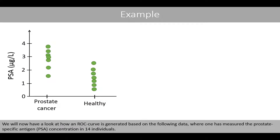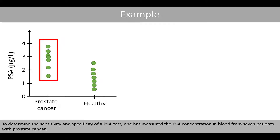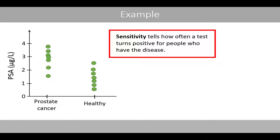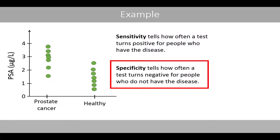We'll now look at how an ROC curve is generated based on data where one has measured the prostate-specific antigen concentration in 14 individuals — 7 patients with prostate cancer and 7 healthy controls. Sensitivity tells how often the test turns positive for people who have the disease, whereas specificity tells how often the test turns negative for people who don't have the disease.